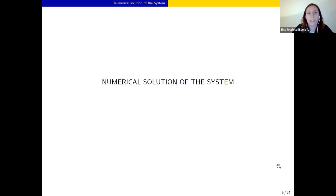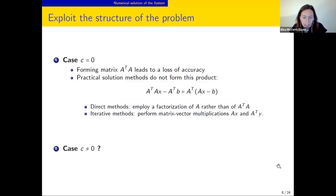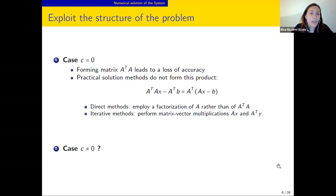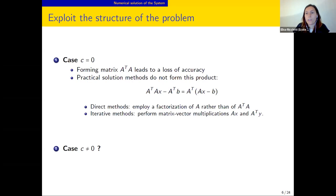For the numerical solution, we want to exploit the strong structure of the problem, as in the least squares case. We know that forming A transpose A is a bad idea because it leads to a loss of accuracy. Instead, we can exploit the structure: the residual factorizes in a useful way, so both direct and iterative methods can use factorizations of A rather than A transpose A, and perform matrix-vector multiplications of the form Ax and A transpose y.